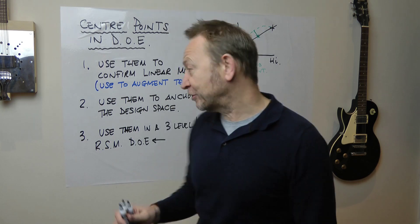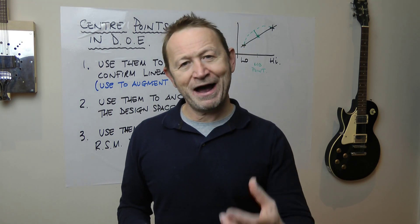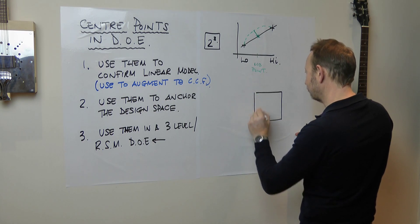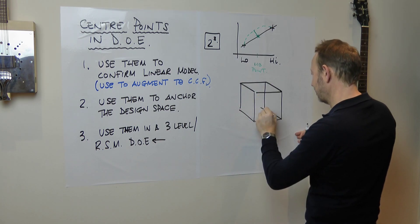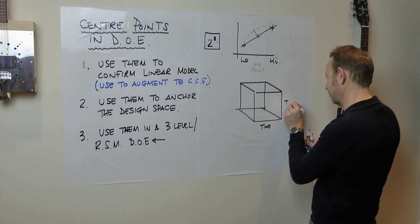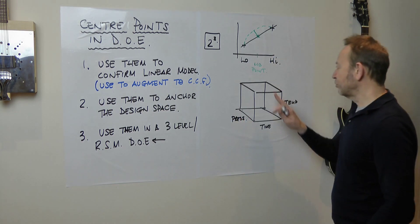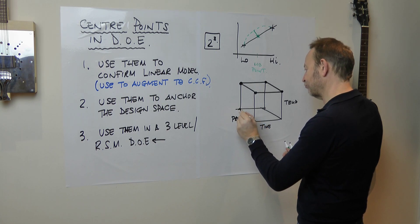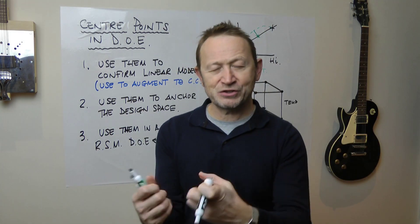That's my use of centre points. But I came across this one: one of my clients uses the centre points to anchor the design space. A key point when doing a DOE is that you have a design space — in the case of a three-factor DOE with time, temperature, and pressure — you're testing at the corners, the eight corners of that central composite design.